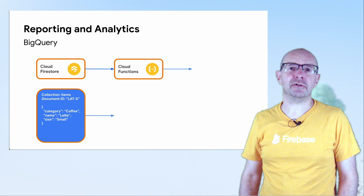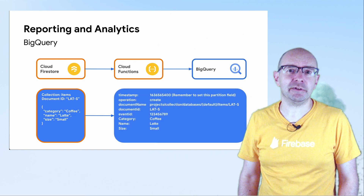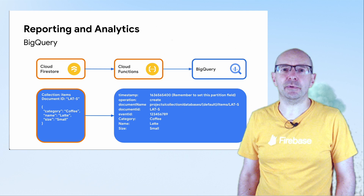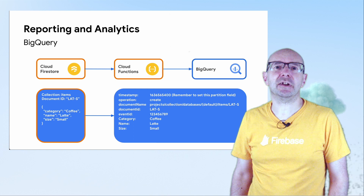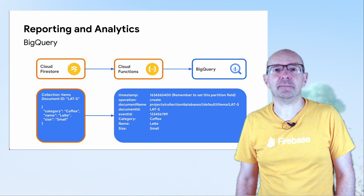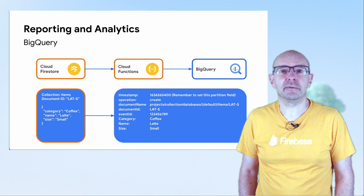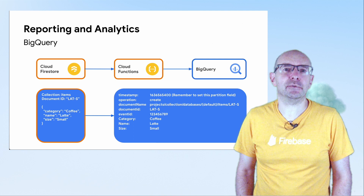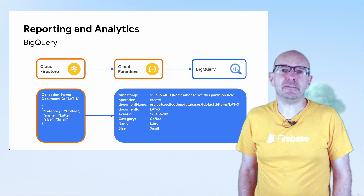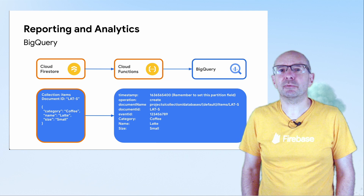Setting a BigQuery partition — usually with a date value — and having cluster fields will allow you to dramatically reduce the amount of data that your query looks at. For example, if you want to run a report for the last seven days there's no point querying data from several months or years in the past. Similarly, if your query only looks at a few fields there's no point querying every column or all of the values in the built-in JSON string. Having your function write individual Firestore document fields to BigQuery fields will really help here.